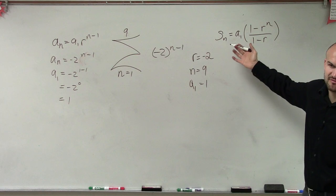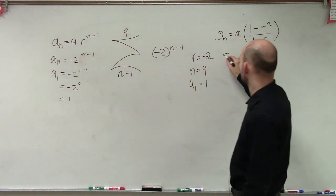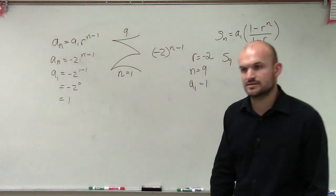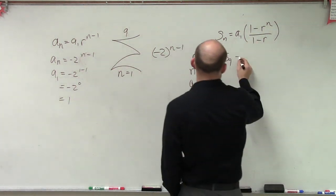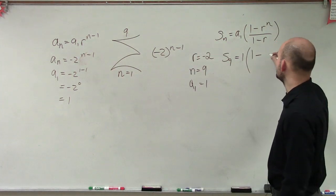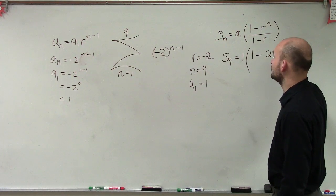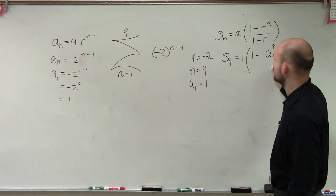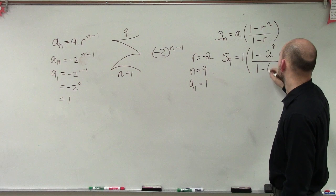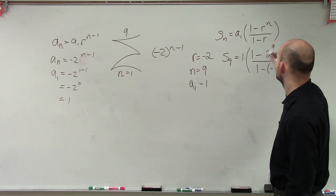So I'm just using that so I can plug in the formula for my sum. Because what I'm trying to do is find the sum, the partial sum of 9 for this series. So therefore, that's going to equal a sub 1, which we said was 1, times 1 minus our ratio, which is negative 2, raised to the 9th, divided by 1 minus negative 2.